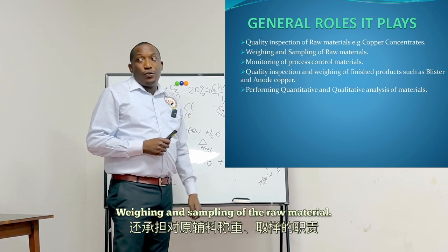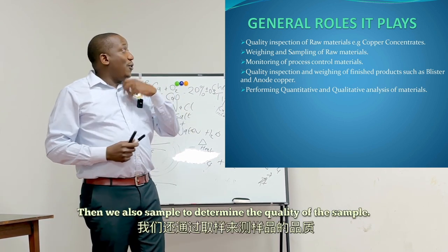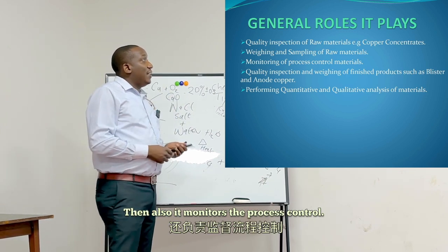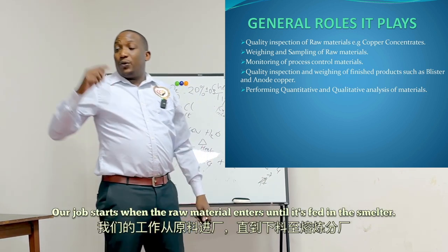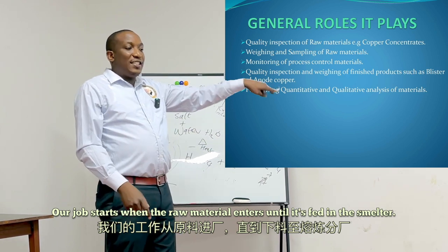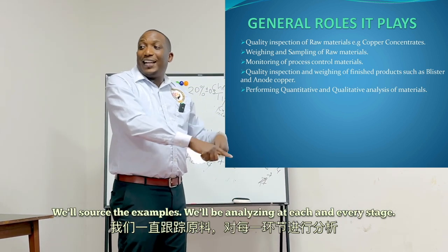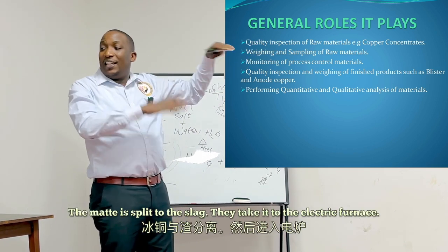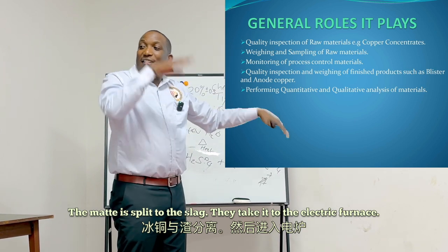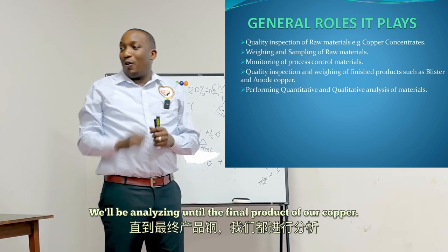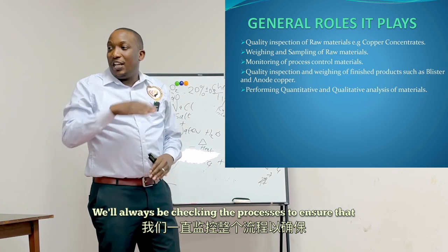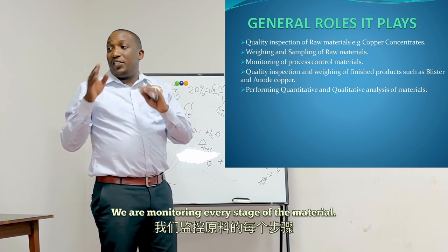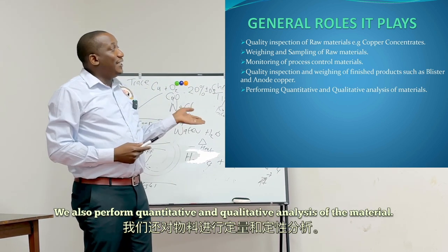We also do weighing and sampling of raw materials to determine mass and quality. We monitor process control — our job starts when raw material enters and continues through every stage in the smelter. We analyze the mud, the slag, all the way to the final copper product, always checking processes to ensure good quality control and quality assurance. We also perform quantitative and qualitative analysis of the material at every stage.